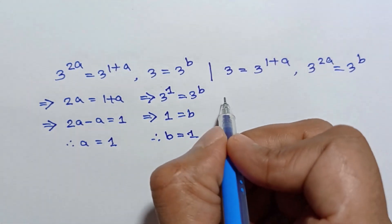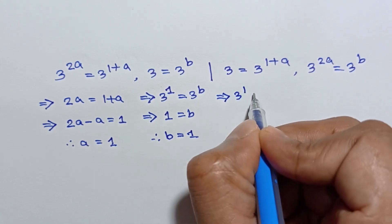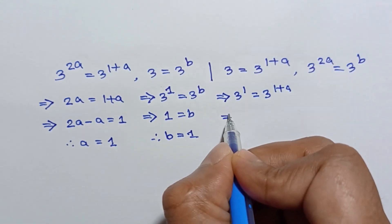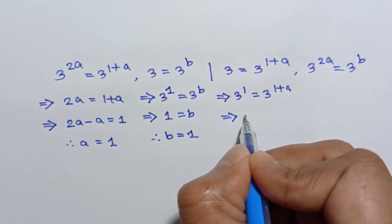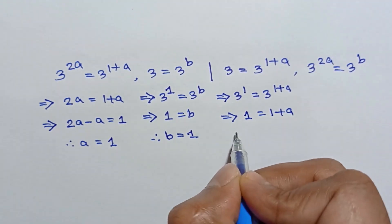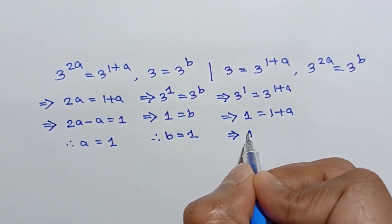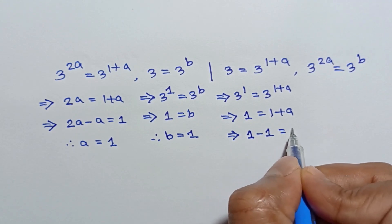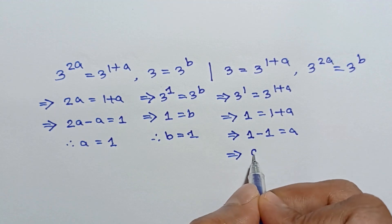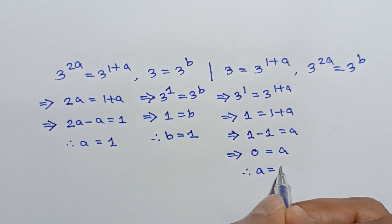In the second case, 3 to the power 1 is equal to 3 to the power 1 plus a. Since the bases are the same, the powers are equal: 1 is equal to 1 plus a. Taking 1 to the left side: 1 minus 1 is equal to a, so a is equal to 0.